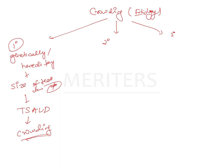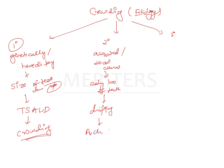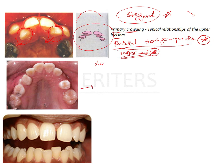Secondary crowding is that kind of crowding which occurs because of any acquired or local causes. It is typically seen when there is early loss of teeth with no replacement, causing drifting of adjacent teeth which takes up the space and brings about a decrease in arch length.